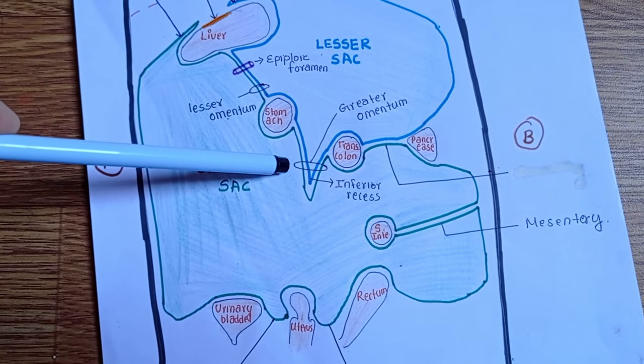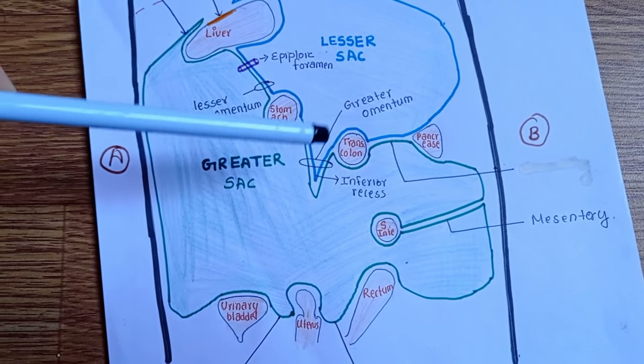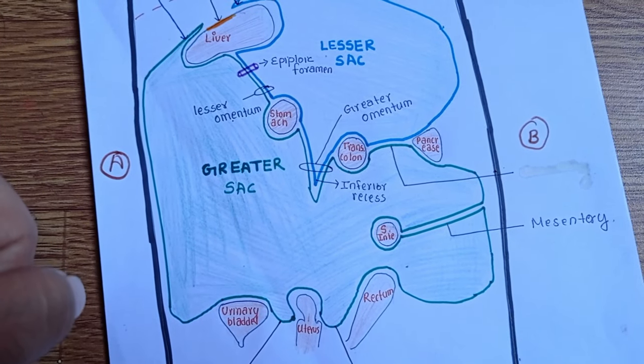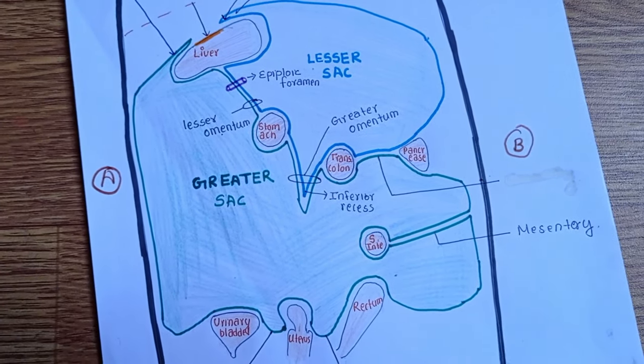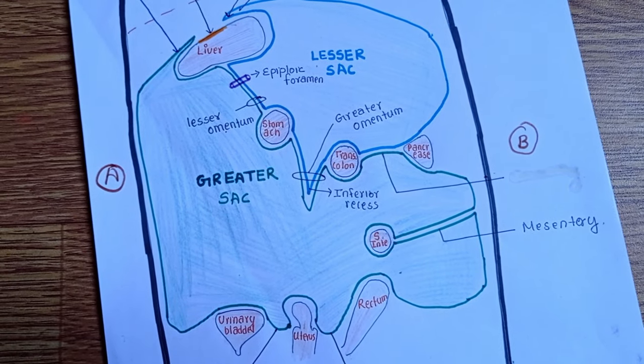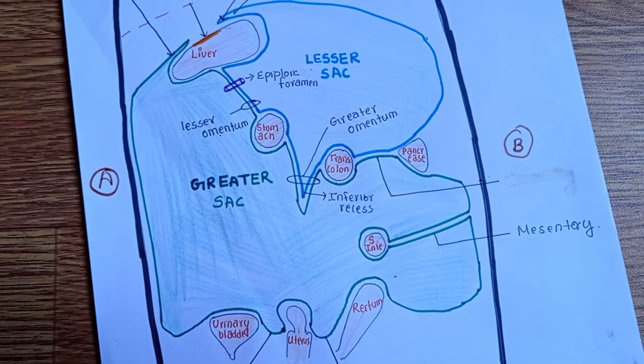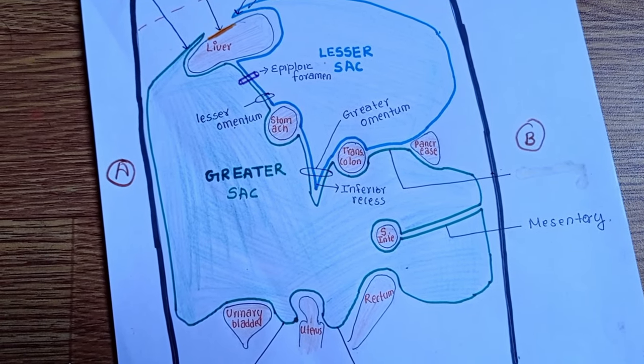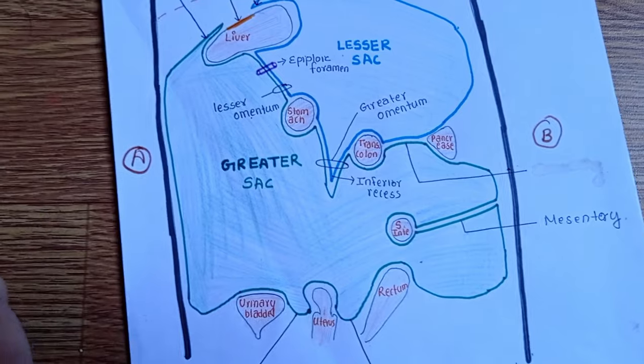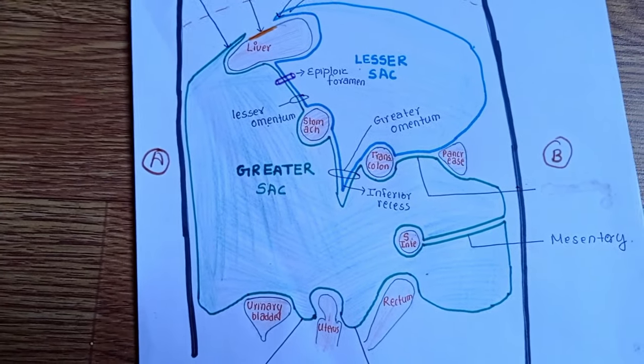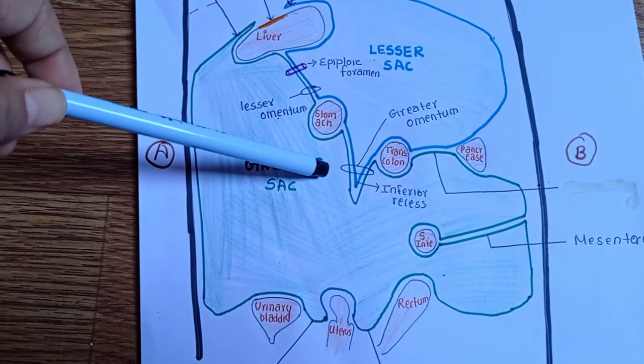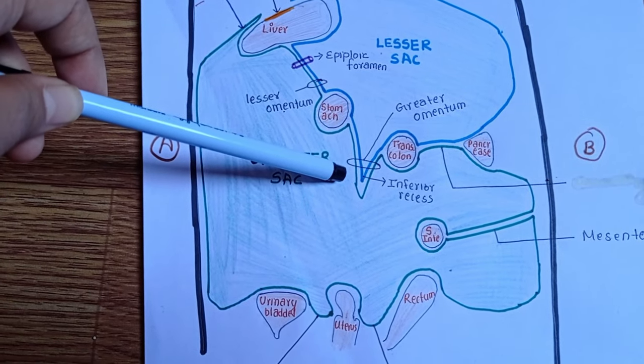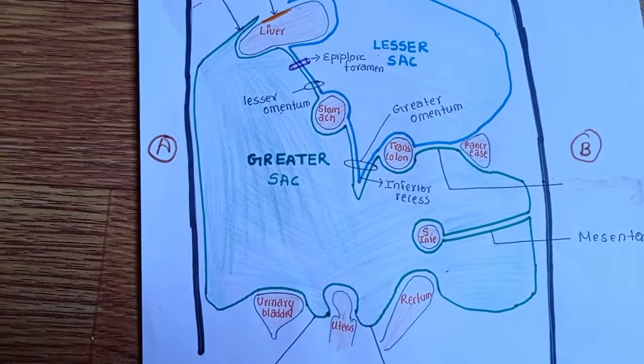It contains our right and left gastroepiploic vessels and its anastomosis and fat. It hangs down from the greater curvature of the stomach. Talking about its function, it protects from infection due to presence of macrophages. There is a very interesting thing here: greater omentum is also known as the policeman of the abdomen because it checks the infection from spreading.